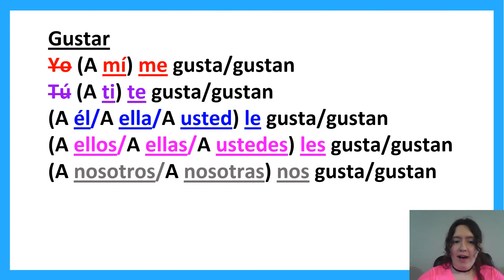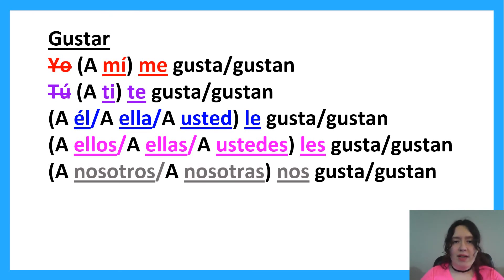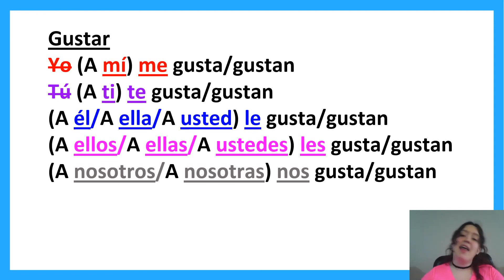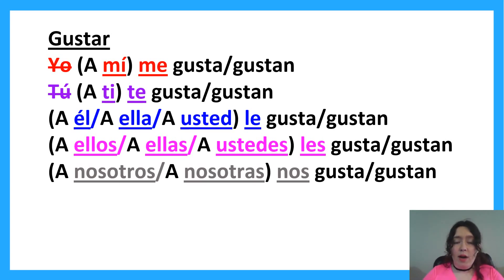We have 'me' when talking about something I like, 'te' when talking about something you like informally, 'le' when talking about what he, she, or you formally like, 'les' when talking about what they or you all like, and 'nos' when talking about what we like. Now let's see some examples.